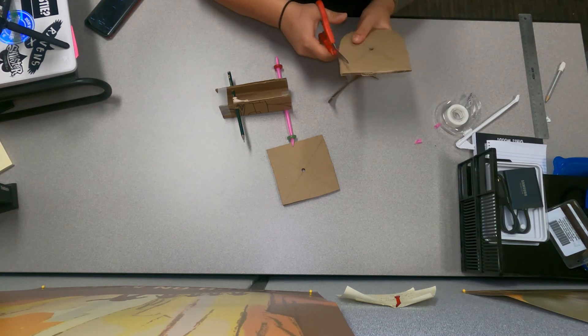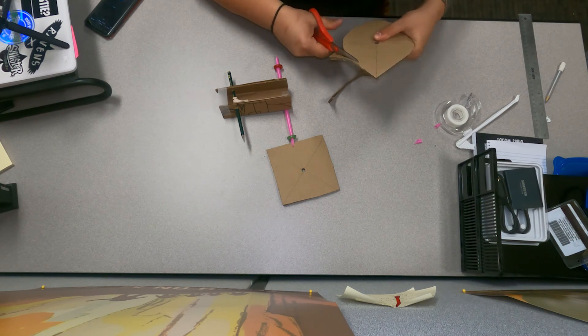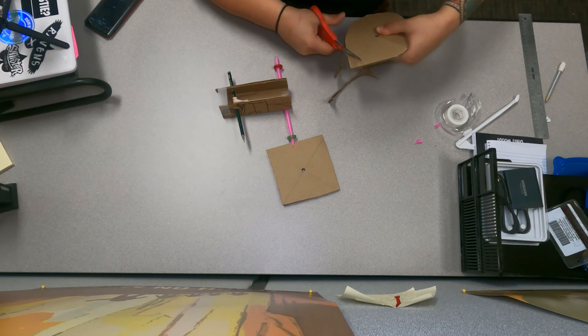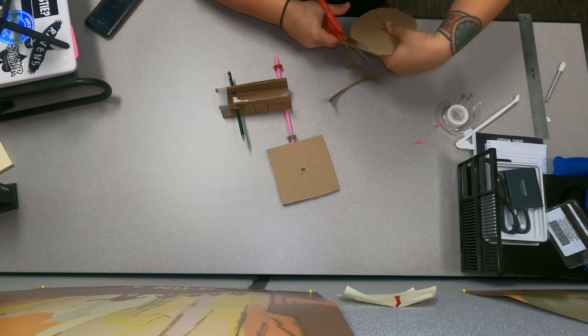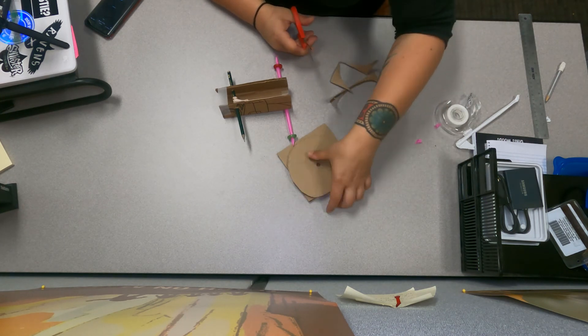And then you can grab the other piece and use your first wheel as a template to help cut out your second one so that both of them are the same size.